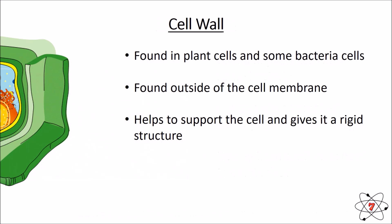Our last organelle is the cell wall. The name kind of implies where they're going to be — they're found on the outside of our plant cells. They're also found in a few bacteria cells. They're a wall, so they hold everything up, and walls go on the outside. People get the membrane and the wall confused — don't. Wall on the outside, membrane is just on the inside. Because the wall supports the cell, it makes everything nice and rigid.